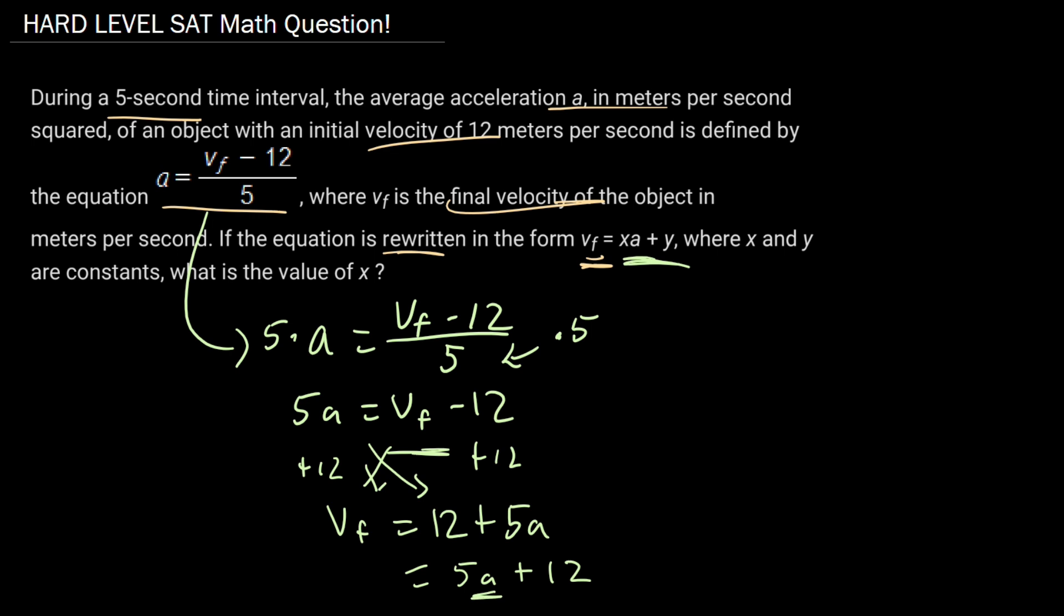So we see that our coefficient of a is just 5. And again, this is a hard-level problem for the digital SAT. Really not that difficult. We just had to do a little bit of simple algebra to get our answer is just 5.